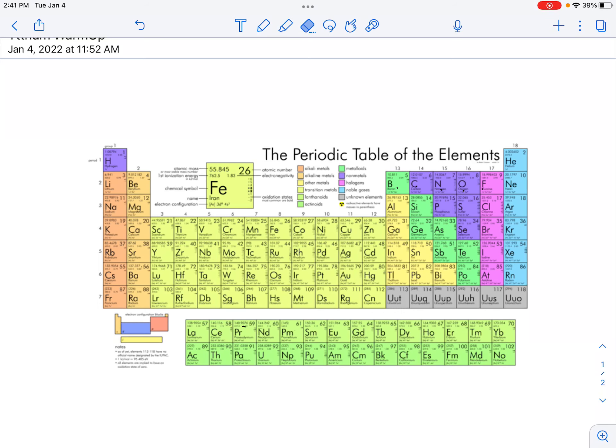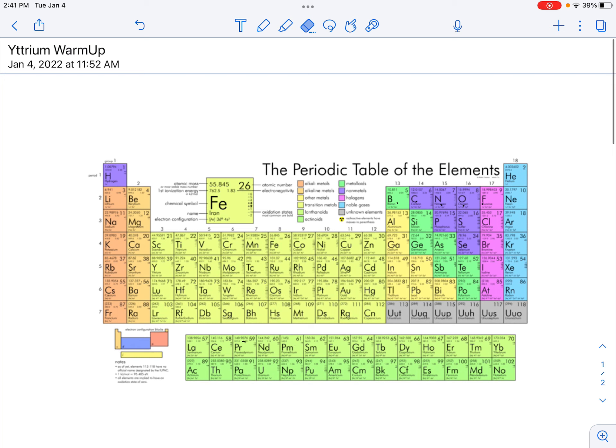All right, in today's warm-up, you are asked to write the electron configuration for the element yttrium, which is element number 39 on the periodic table. It's a transition metal right here.